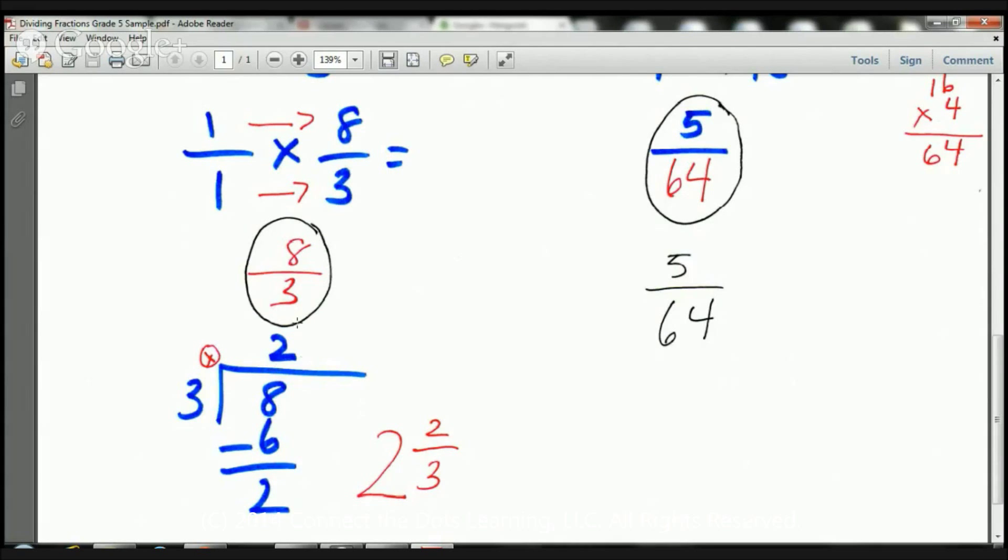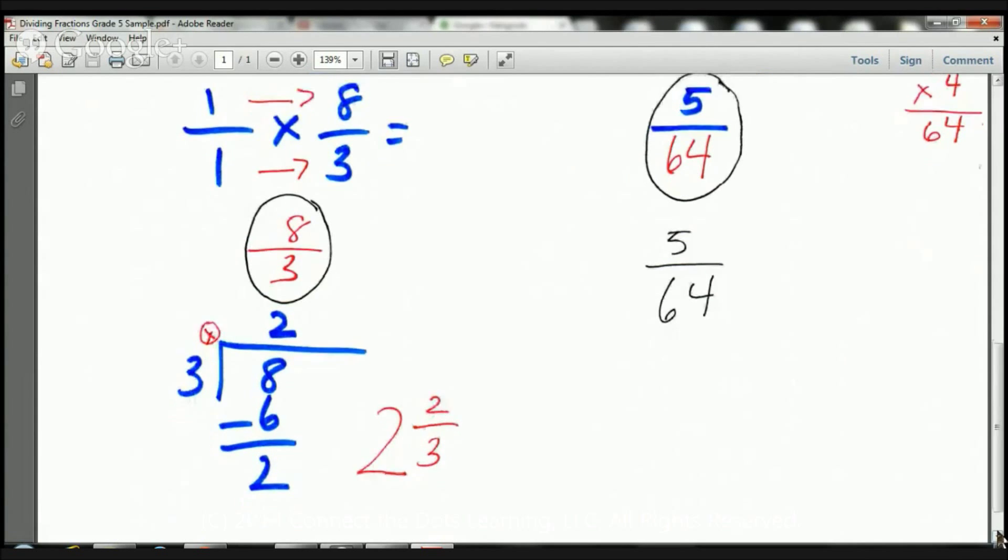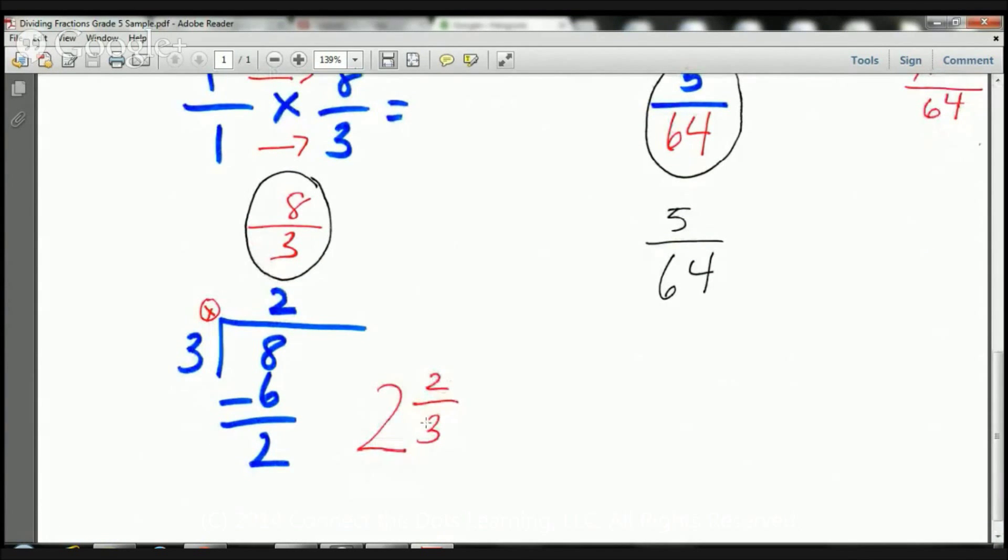So, our whole number is going to be this one here, this two, right there, and then our numerator is going to be this two, and our denominator will be the three. So, in this case, our mixed number is going to be two and two-thirds. Eight-thirds equals two and two-thirds.